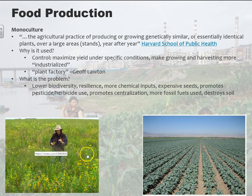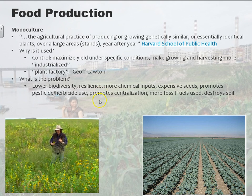Whereas in a polyculture setting, if you have a pest or fungus that attacks one of the plants, there are other plants that sort of back it up. So resilience is compromised. Nature doesn't normally do this, so in order for things to grow this way you have to have more chemical inputs — more fertilizers because the soil can't handle that yield, more pesticides, more herbicides, generally speaking.